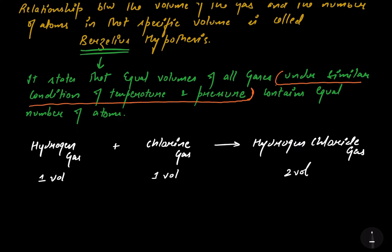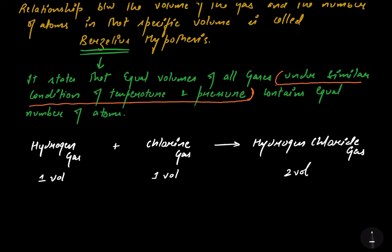Now let us apply the Berzelius hypothesis. It says that two gases under similar conditions of temperature and pressure will have equal number of atoms in equal volumes. So this hydrogen gas is one volume — let us consider it has N number of atoms. The chlorine gas also has N number of atoms because it is also one volume. But hydrogen chloride is two volumes, so it will have 2N compound atoms.